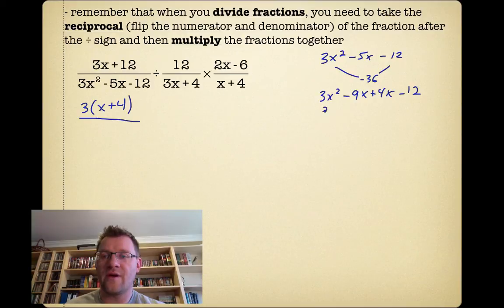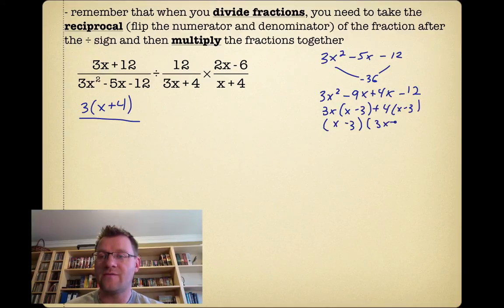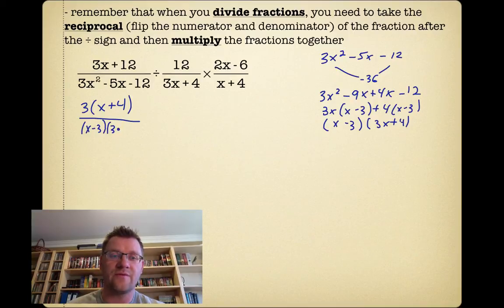Now I take out a greatest common factor from the first two terms and get 3x(x - 3). Take out a 4 and I get (x - 3), which is a good sign because I want those same two factors. So I get (x - 3)(3x + 4). That means 3x² - 5x - 12 can just be replaced with (x - 3)(3x + 4).